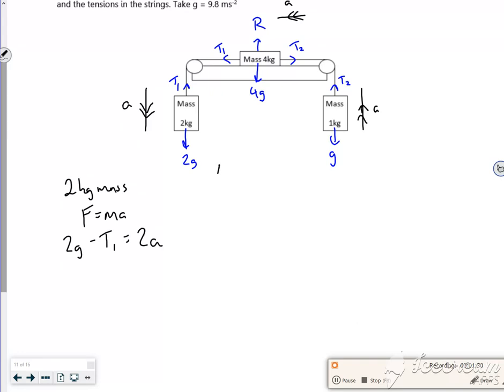So then let's look at the 4kg mass now. So I'm going to do F equals ma. So the force in the direction of travel is T1. The force, supposedly it's T2, it's smooth so there's no friction. That's equal to 4 lots of a.